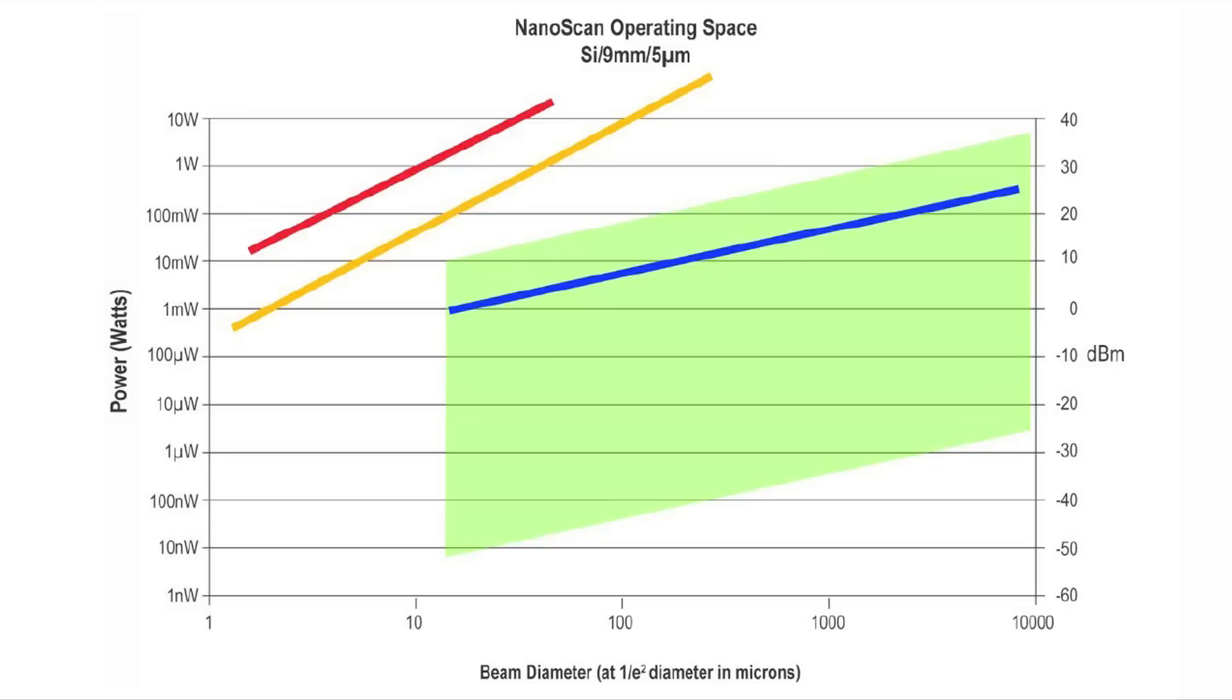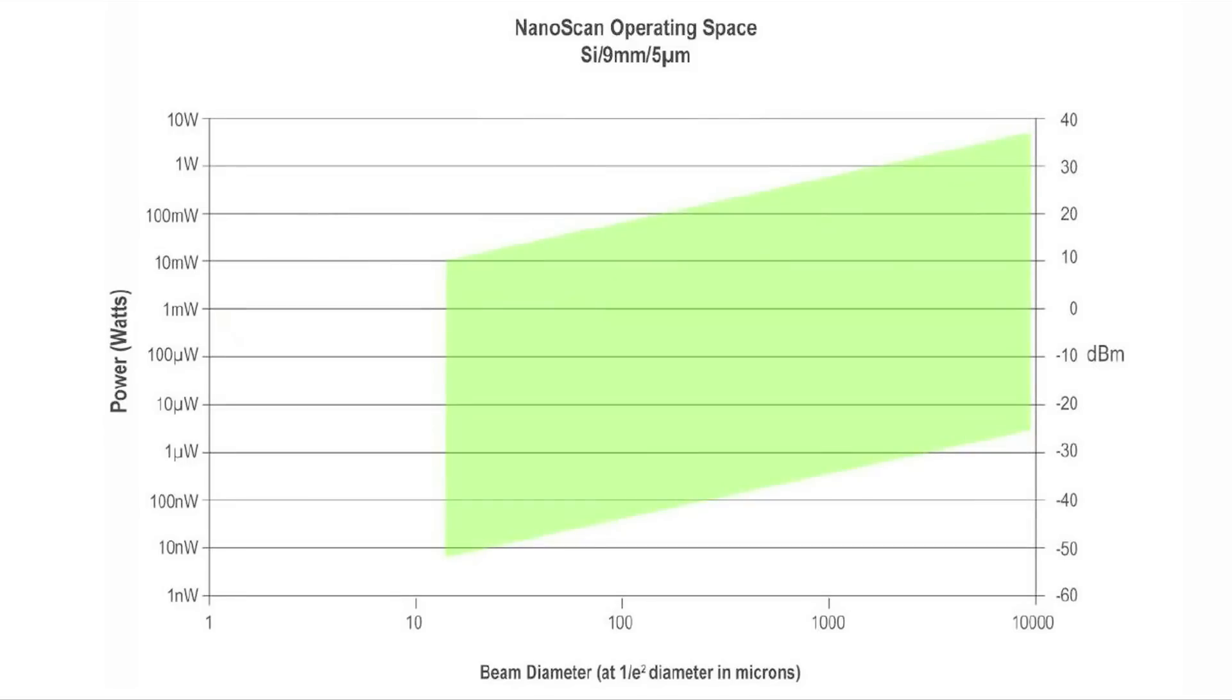For example, in the silicon 9.5 chart, the y-axis is the power in watts. The x-axis is the beam diameter of a 1 over e squared width beam. The green space shows the safe operating region for the nanoscan head.